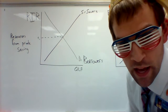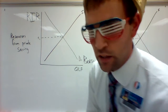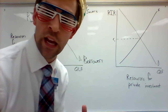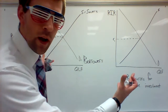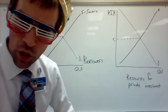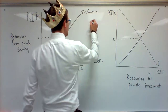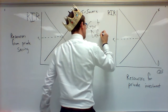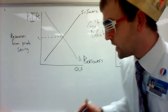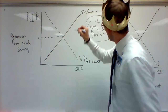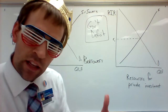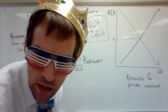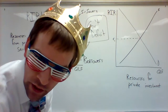So I'm going to give you a scenario that's kind of common. Let's talk about when the government runs a deficit. A government deficit means they spend more money than they bring in, and it can be shown two ways in this market.